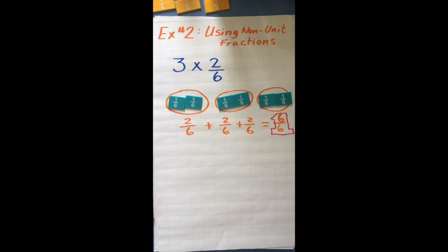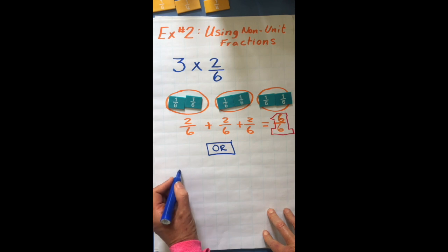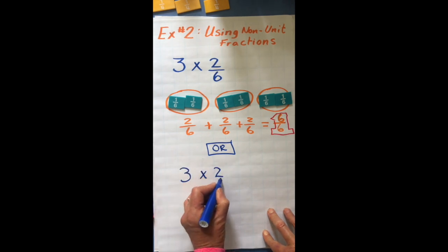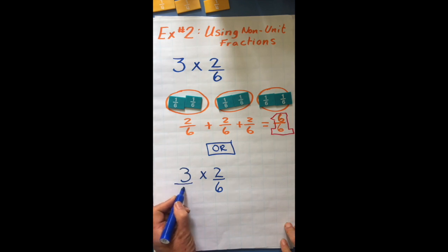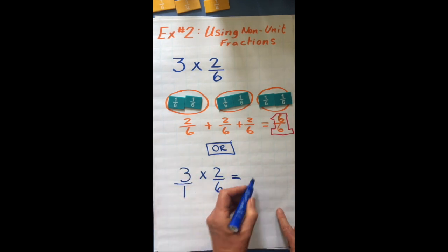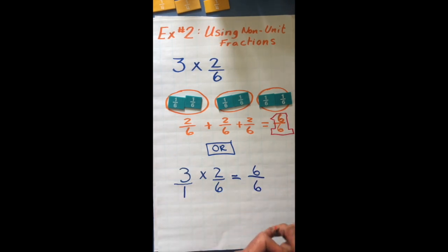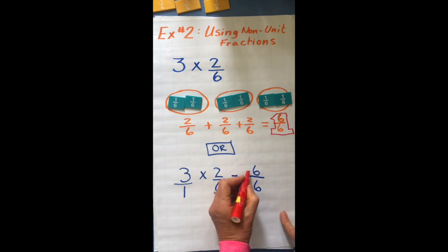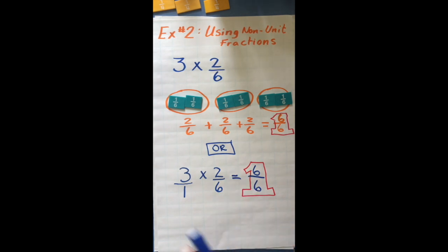Or we can just use our song. Let's write it again: three times two-sixths. Multiplying fractions — wait, three isn't a fraction, so I'm going to put it over one. Now I can do it. Multiplying fractions is no big problem. Top times the top: three times two is six. Bottom times the bottom: one times six is six. The numerator and denominator are the same, so we get one whole. I hope that helps. Bye!